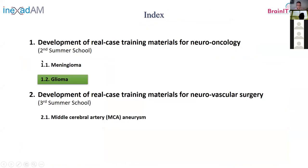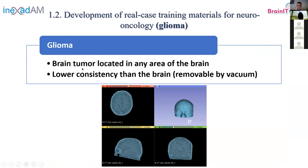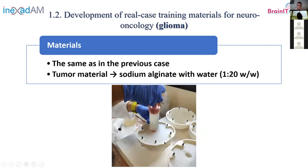The first case is done. The second case is more or less similar — I will go faster. It was a glioma case. The difference is that the tumor is not close to the meninges but in the middle of the brain. In these cases, the consistency of the tumor is usually lower than the brain — they even remove it by vacuum. The idea was to leave a hollow inside the brain and infiltrate a material that could mimic the tumor.